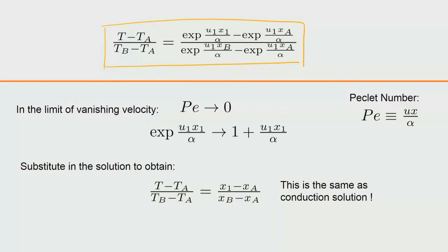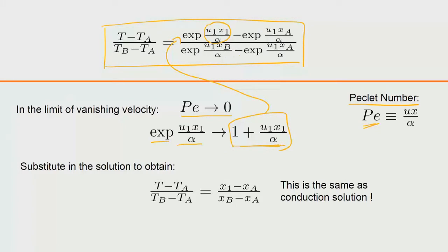To understand the profile shape, we introduce the Peclet number, defined as velocity times distance divided by diffusivity (Pe = uL/α). In the limit of very small Peclet number, the exponential is approximated as 1 plus its argument. Substituting into the full expression causes all four exponentials to reduce, and the solution reduces to a linear (straight-line) conduction profile. This retrieves the pure conduction solution in the limit of negligible convection, validating the approach.